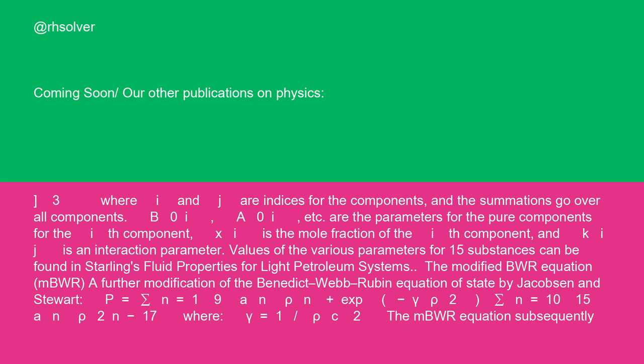The modified BWR equation (mBWR), a further modification of the Benedict-Webb-Rubin equation of state by Jacobsen and Stewart: P equals sum n=1 to 9 of an rho^n plus exp(minus gamma rho²) sum n=10 to 15 of an rho^(2n-17), where gamma equals 1/rho_c².